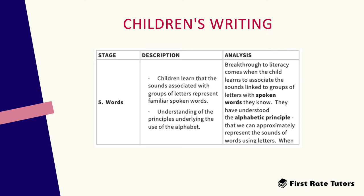In the fifth stage, called words, children learn the sounds associated with groups of letters and what they represent when it comes to familiar spoken words. They also learn to understand the principles underlying the use of the alphabet. The breakthrough to literacy comes when children learn to associate the sounds linked to groups of letters with spoken words that they know — they have understood the alphabetic principle and that we can approximately represent sounds using letters.